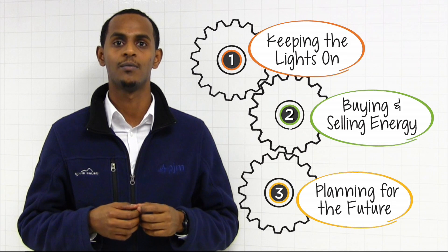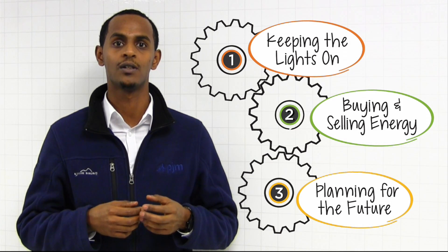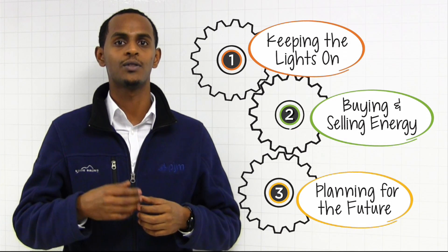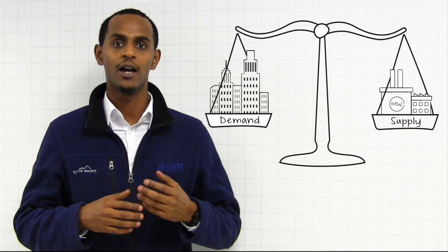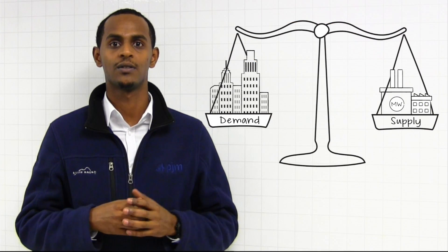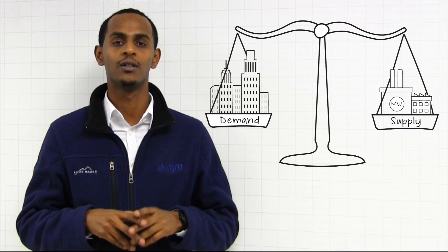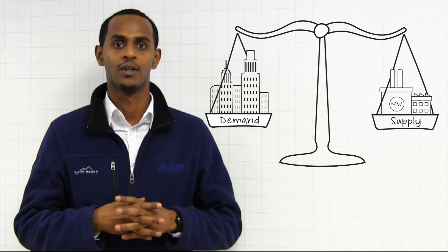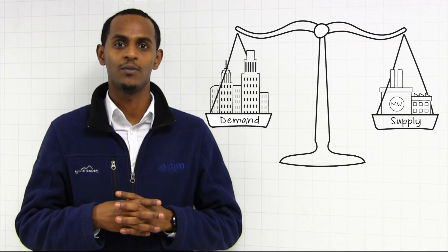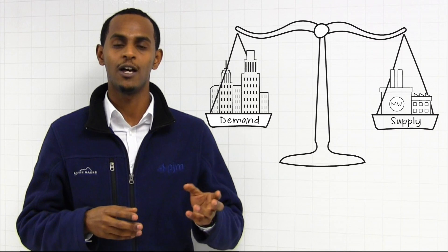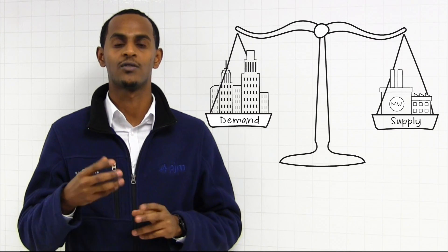PGM's planning process aims to assess and manage the future needs of the electric grid. Consider supply and demand. Supply is the generation of the system. Demand is the load from customers. Our planning process aims to ensure there is adequate supply as well as infrastructure to satisfy that demand.